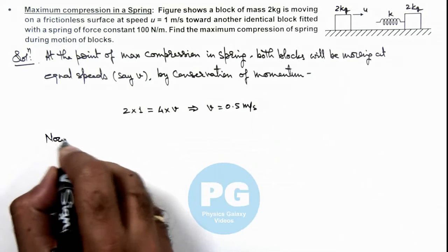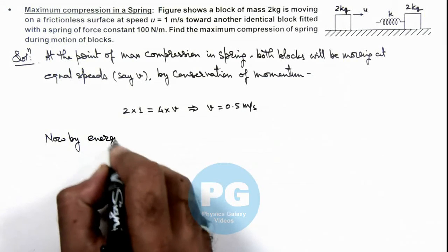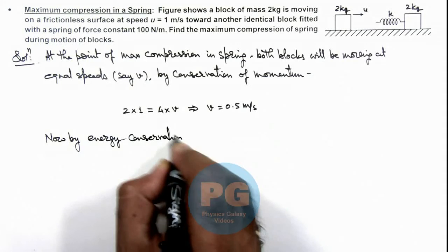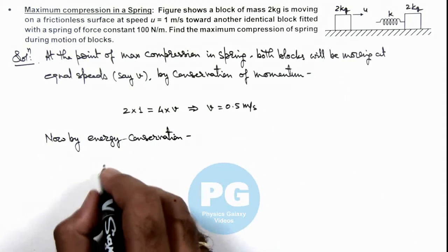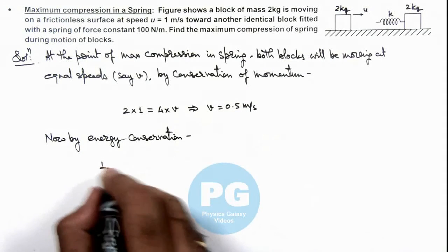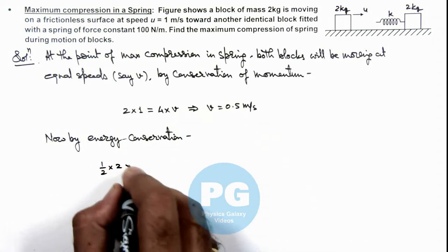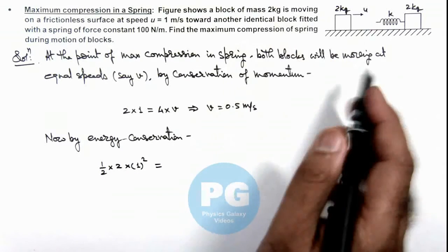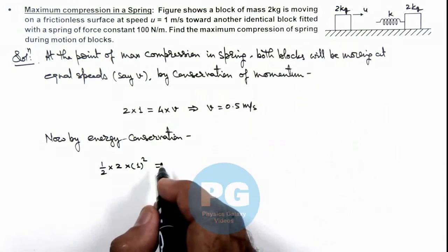Now by energy conservation, here we can write the initial kinetic energy of the block was ½×2×1². Finally the total energy of system must be equal to the kinetic energy of initial block.